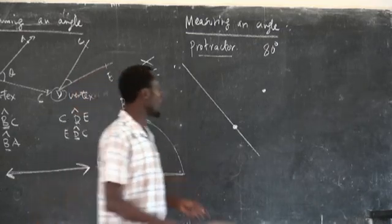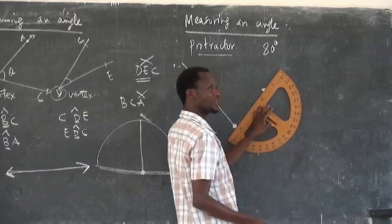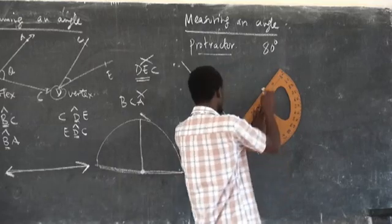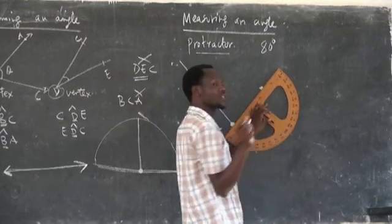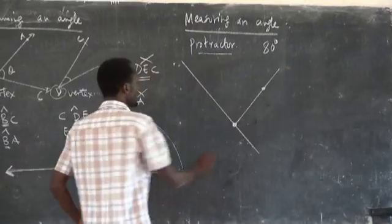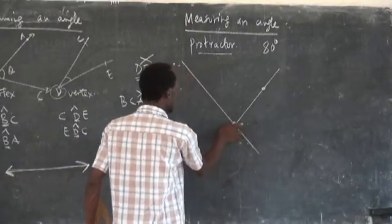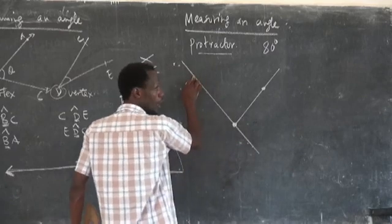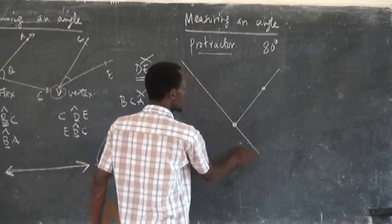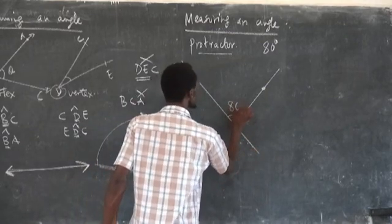By joining these points, we have this line. Join the point that you obtained after marking 80 degrees, then join it to the vertex point. This is how I do it. Then this is an angle. Don't think about the other side — because we counted from this line and not from the other line. So this is the angle we are talking about. This is 80 degrees.